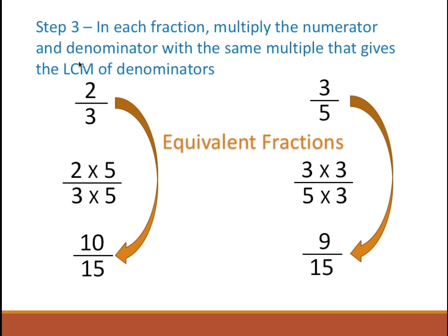The values 2 by 3 and 10 by 15 are the same because we multiplied the numerator and denominator by the same value. So we have converted these two fractions, and now the denominators are common — the value is 15. So now we are ready to do any comparisons, add the fractions, or subtract — anything we'd like to do with these two fractions — because now they are like fractions.